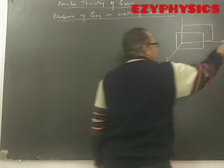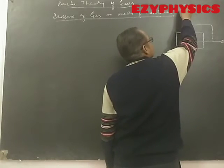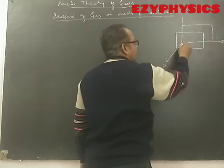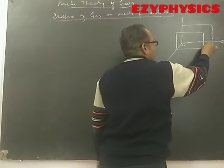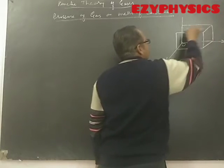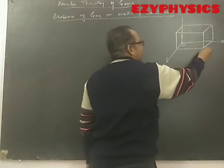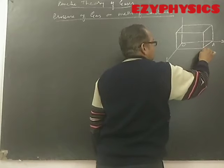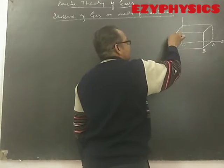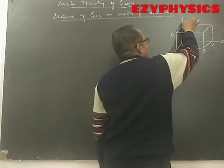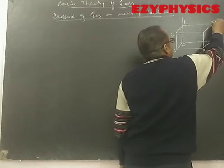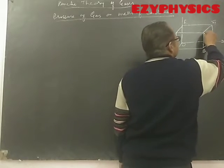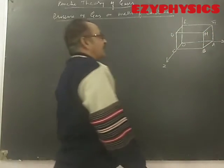This is our y-axis, this is our x-axis, and this is our z-axis, with the origin here. Completing this cuboid, the vertices are labeled as A, B, C, E, G, H, and O.